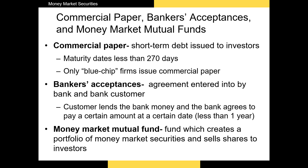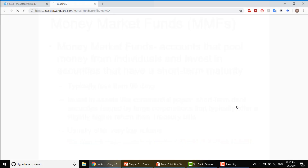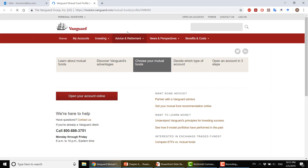Finally, we have money market mutual funds, which are similar to other mutual funds since they manage a portfolio of assets. The defining characteristic of money market mutual funds is that their portfolio consists entirely of short-term assets like T-bills, CDs, and commercial paper. Usually these securities have an average time to maturity of less than 90 days. Let's take a look at the Vanguard Prime Money Market Fund as an example.